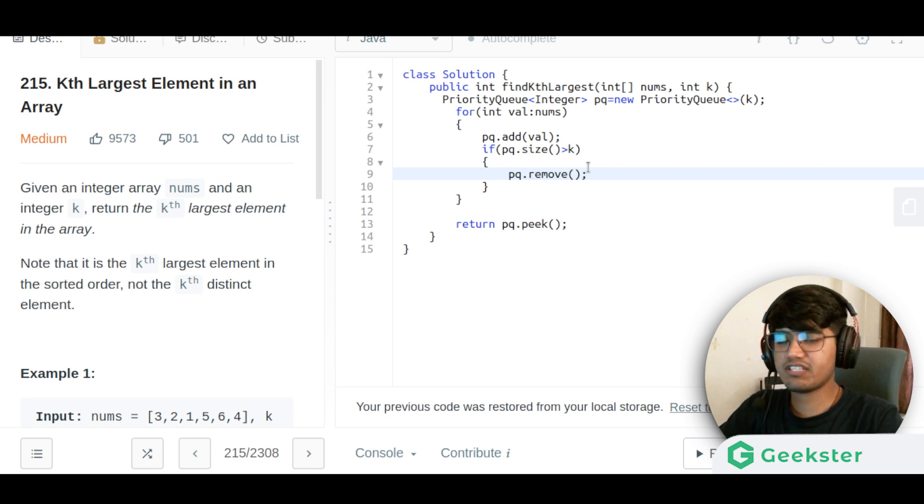What this remove function does - if it is a min heap it will remove the minimum element, if it is a max heap it will remove the maximum element which is at the top. At the final we are sure that the k largest element will be present at the top of the heap, so we are just picking that element from here.